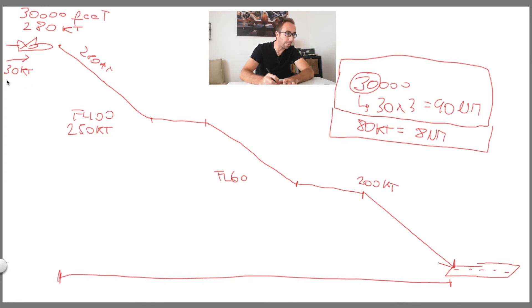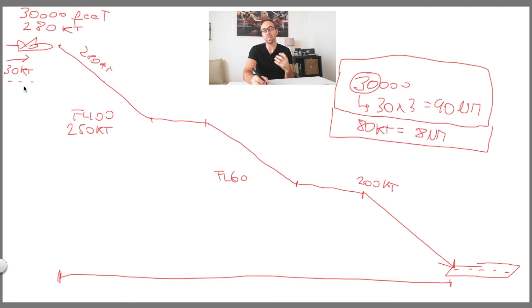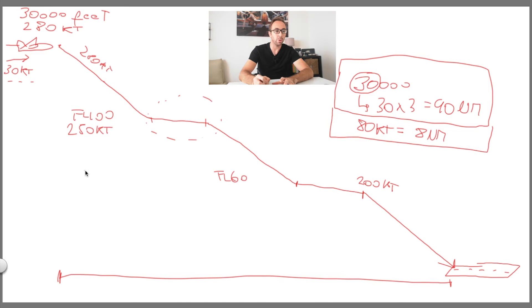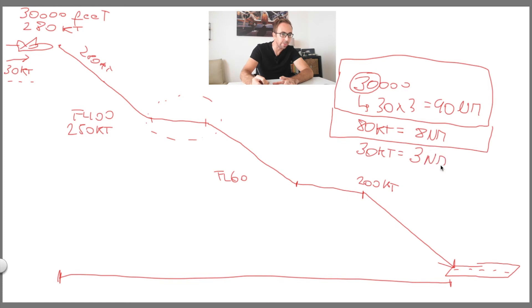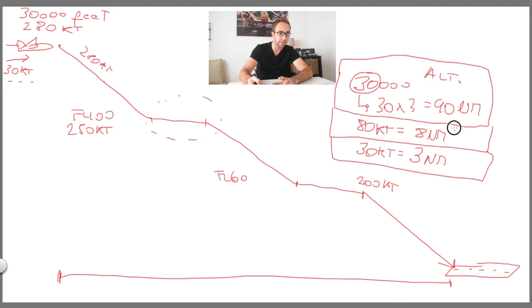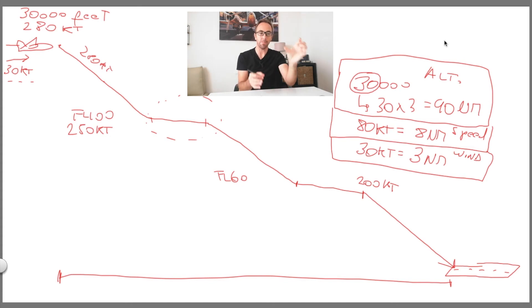We also have a 30-knot tailwind. Since the tailwind will push us, it will be more difficult to decelerate — the deceleration segment with 30 knots of tailwind will be longer compared to no wind, because the wind is pushing us. For each 10 knots of tailwind, we add 1 nautical mile. With 30 knots of tailwind, that's 3 extra nautical miles. So we have 90 miles for altitude, 8 miles for speed, and 3 miles for wind.